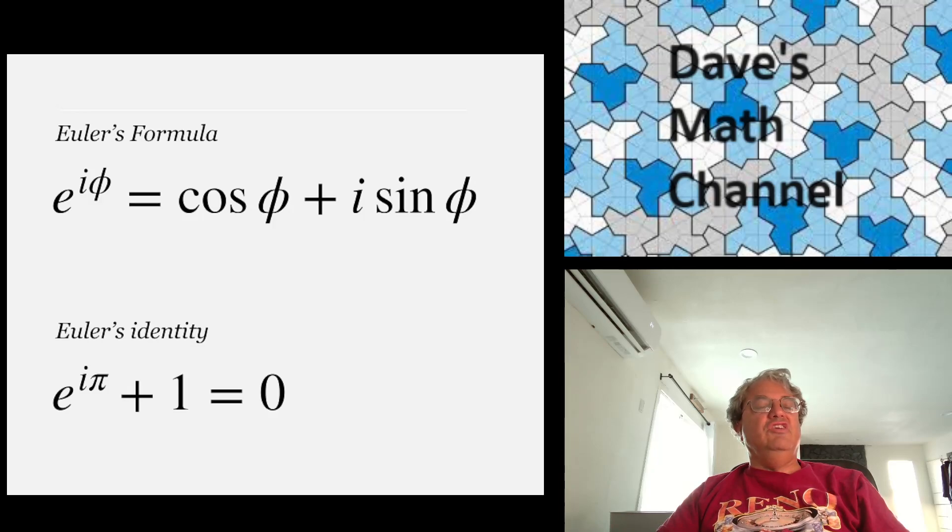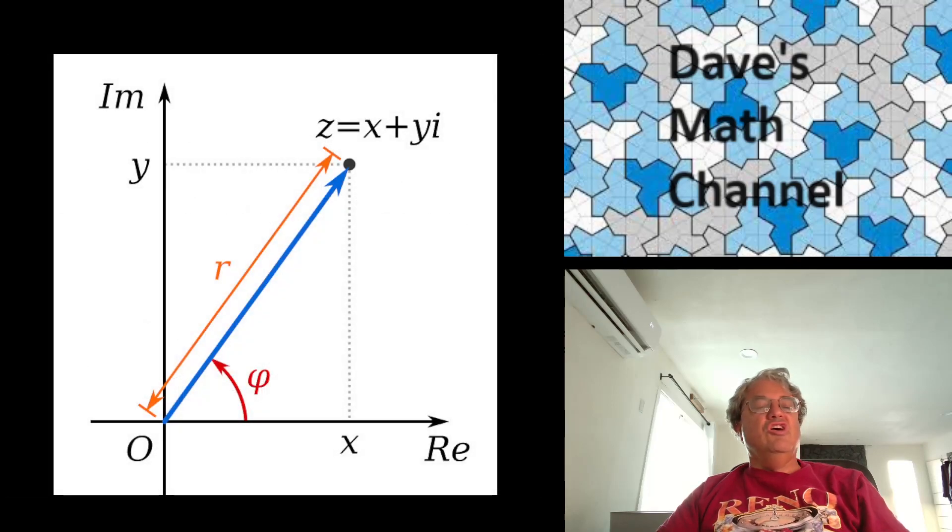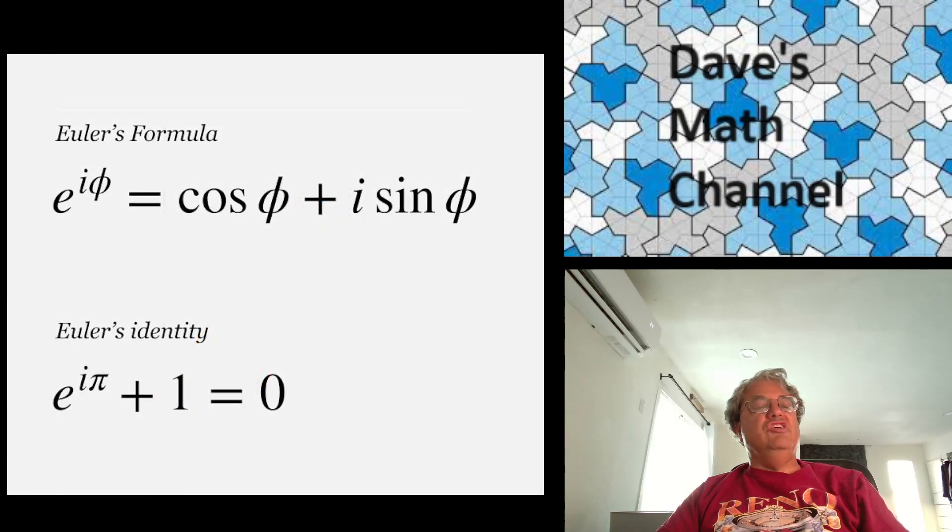So here's the formula. It's e to the i phi. e is the base of natural logarithms. So this is just an exponential expression. So there's a number called e, which is about 2.718. You raise it to an imaginary power, i times phi. Phi is just a real number. But here we think of phi as an angle, the angle I just showed you, this angle, phi.